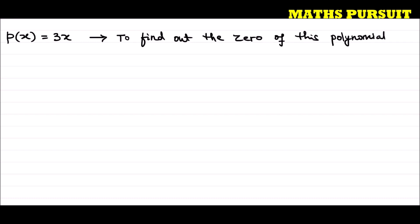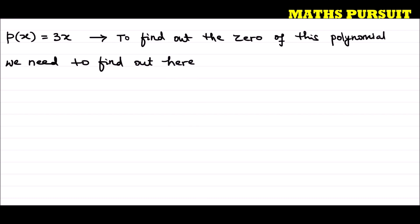What does it mean to find out the zero of a given polynomial? That means we need to find out when p(x) will be zero. This is what we need to find out.